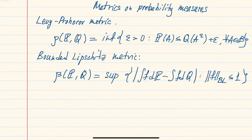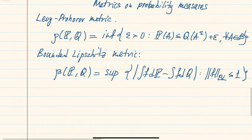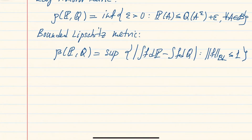The first thing you want to do is check that these are indeed metrics. It's a little more straightforward for the bounded Lipschitz metric because the definition is already symmetric — if you change the order of P and Q, you get the same supremum. The only step requiring a bit of work is showing the Lévy-Prokhorov metric is symmetric, since its definition is not symmetric.